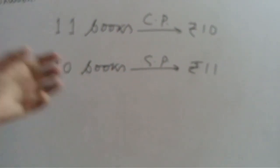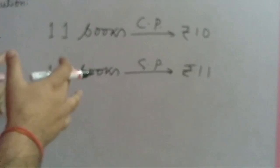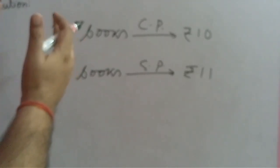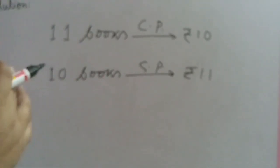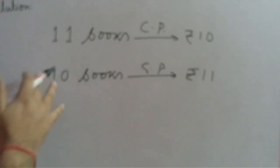The real method is we find the LCM of 11 and 10, that is 110. In this question, we must purchase 110 books and must sell 110 books.